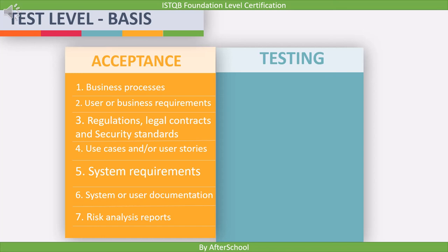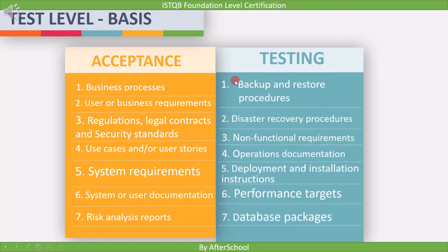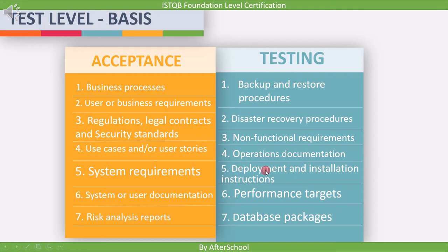Apart from these, there are a few more requirements that act as input for acceptance testing. The first is backup, restore and disaster recovery procedures — this document provides information regarding unusual conditions, such as what happens if the system crashes. The next is non-functional requirements, which specify information like response time, stress testing, or maximum load on the system. Next is the operations document, which describes how the software shall be operated under normal conditions. The fifth point is deployment and installation instructions, which covers how software shall be installed and how future updates shall be handled.